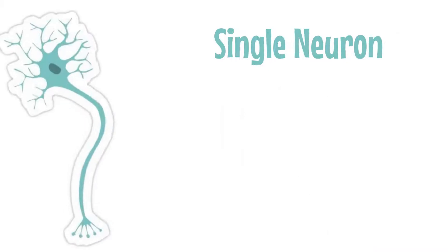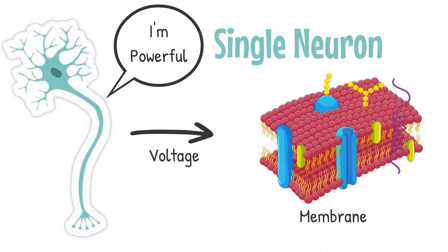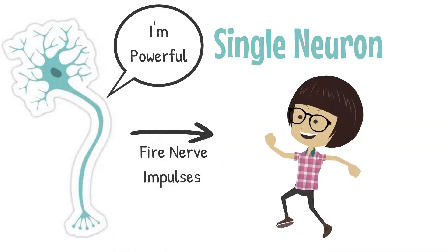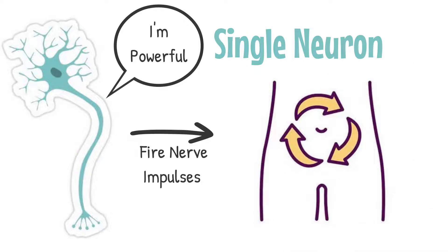A single neuron or nerve cell can do a lot. It can maintain a resting potential or voltage across the membrane, fire nerve impulses or action potentials to help us move and carry out metabolic processes required to stay alive.